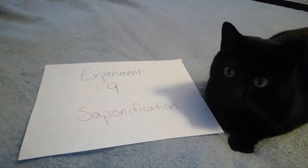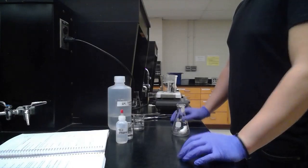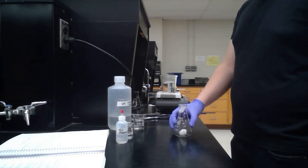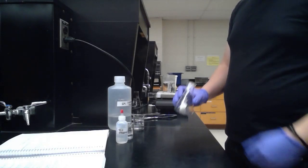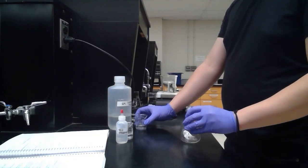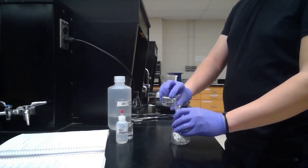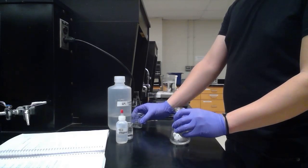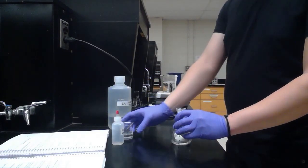Experiment 9, saponification. Here we have 6.31 grams of lard, and we've already added the boiling chips. Now we're going to add 6 molar sodium hydroxide and 95% ethanol.